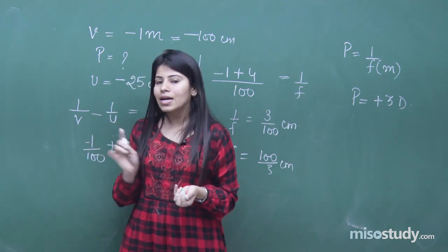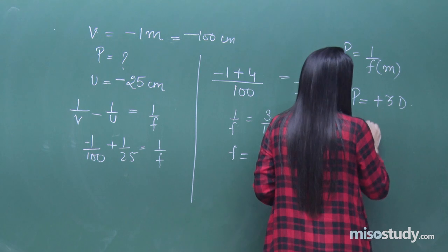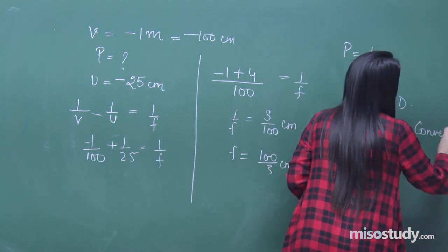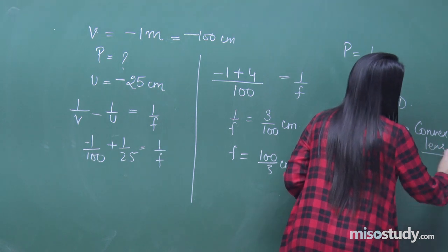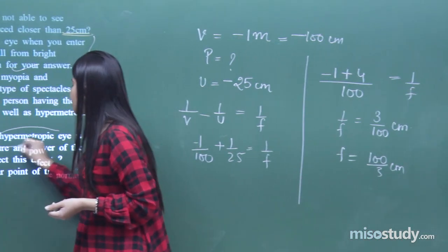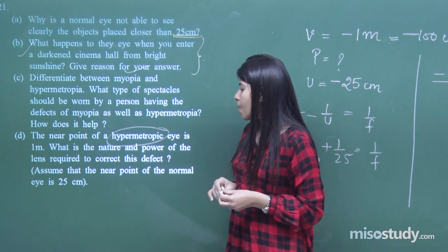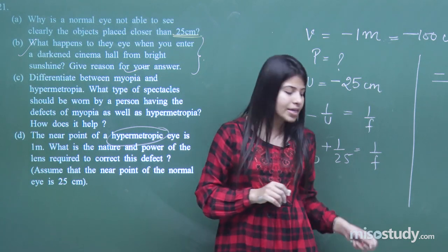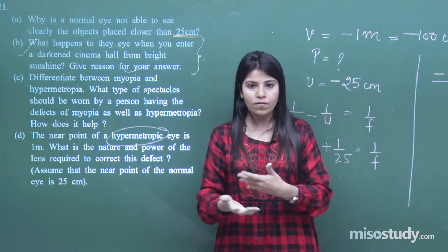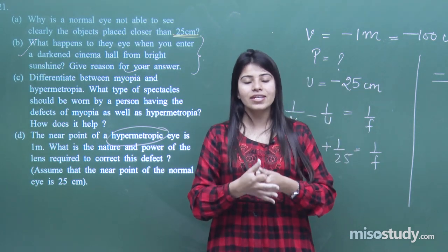Since the power is positive and this is a hypermetropic eye, it is confirmed that we use a convex lens. We have found the power and nature of the lens — power is +3 dioptres and it is a convex lens. This is all from this chapter; the questions on sources of energy will be solved in a different lecture. Keep practicing until then.